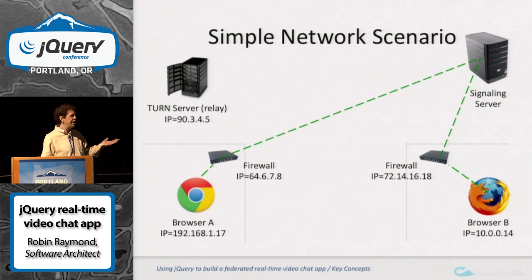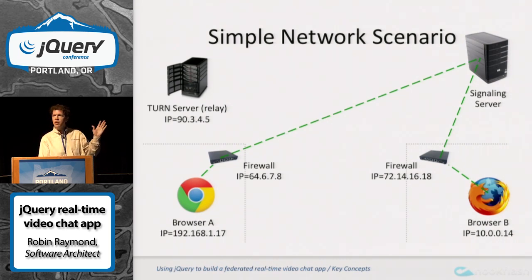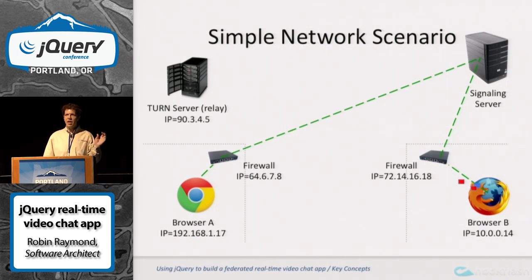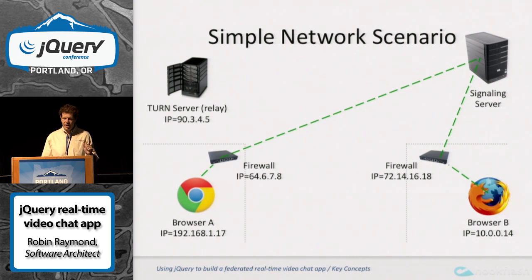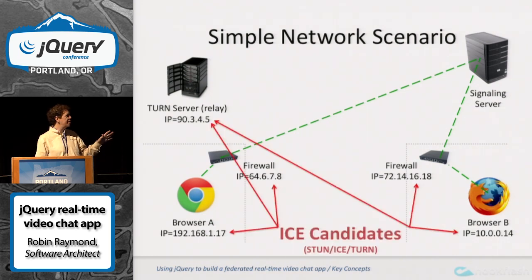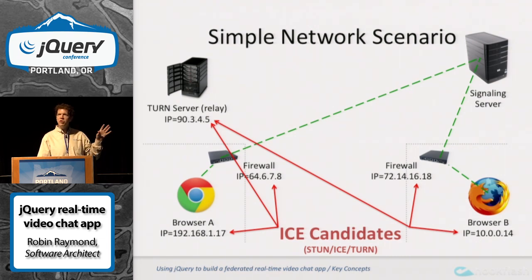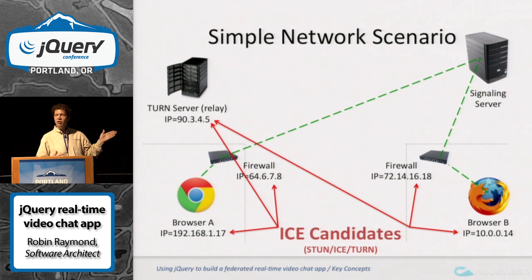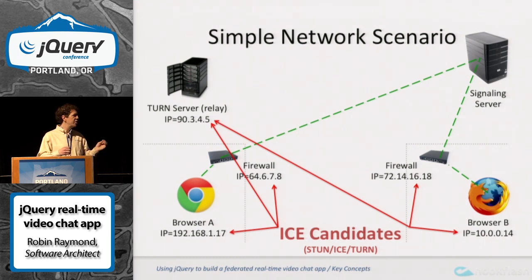This is a very typical situation on the internet. You've got two browsers, and they're going to want to communicate, but they're behind two independent firewalls. If you actually tried to send data directly from browser A to browser B, you couldn't unless you were on the same LAN. So you actually have to send not to the other browser's IP address, but to the browser's firewall. Each of these devices on the internet has their own IP address, and you gather what's called ICE candidates. It's literally a gathering of possible communication points between two locations, and what it does internally is use STUN, ICE, and TURN to gather that information so that it can be transmitted to the other side.